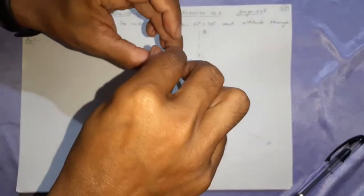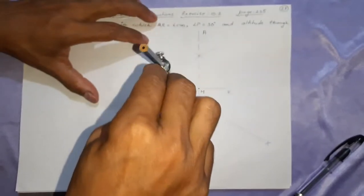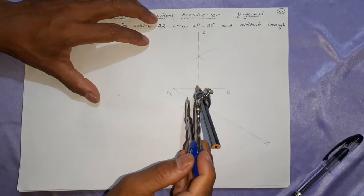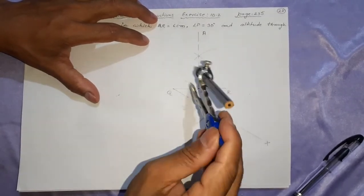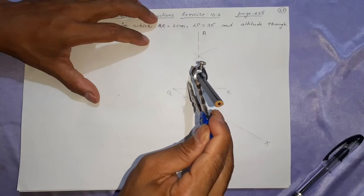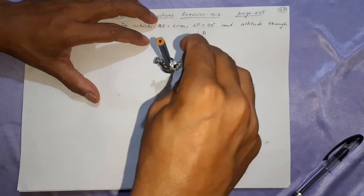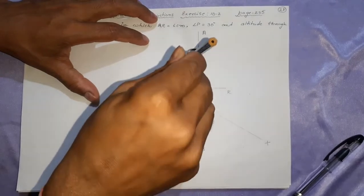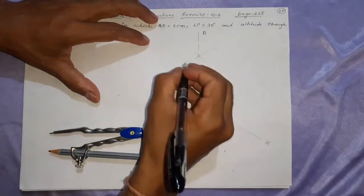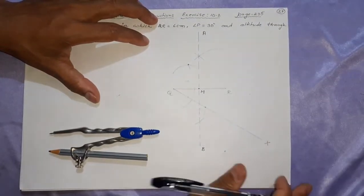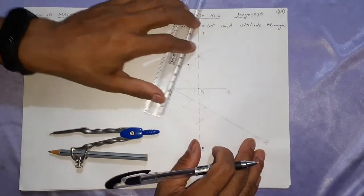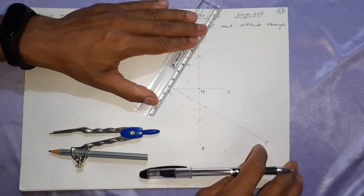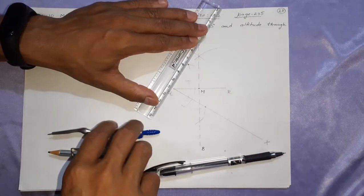Taking equal arc lengths — one, two, three, four — with no change in the arc length. It will be 90 degrees. Join this line. Where it cuts the upper line is important.